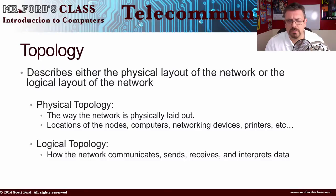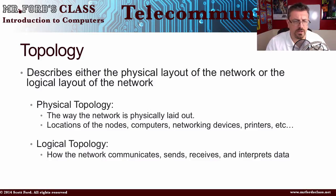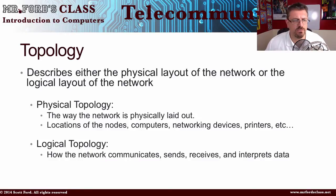Physical topology is the way the network is physically laid out — the location of the nodes, computers, networking devices, printers, etc. Logical topology, on the other hand, is how the network communicates: how it sends, receives, and interprets data.